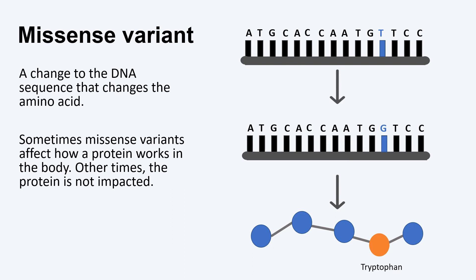Other times the protein is not impacted. In the example we used on the previous slide, TGT codes for the amino acid cysteine. When the second T is changed to a G, it changes the amino acid from cysteine to tryptophan.